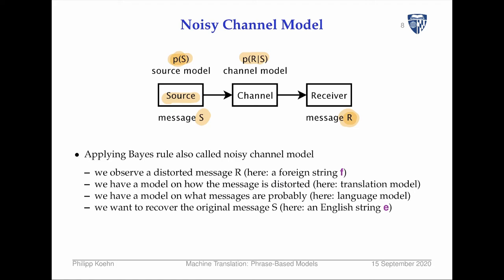In our case we observe a distorted message — this is our foreign string. Someone actually wanted to say something in English, but somehow it came out as French, and we hear that French sentence. We have a model of how the message is distorted — our translation model — and we also have a model of what messages are probable — our language model. We want to recover the original English string.